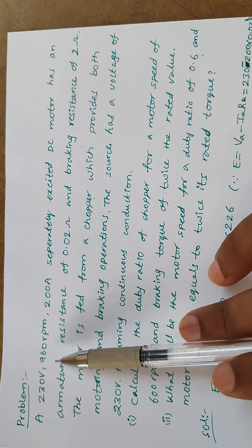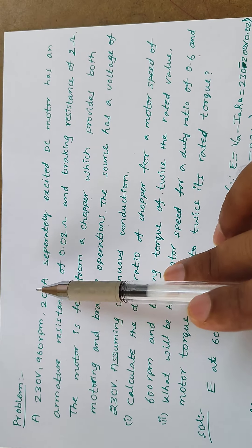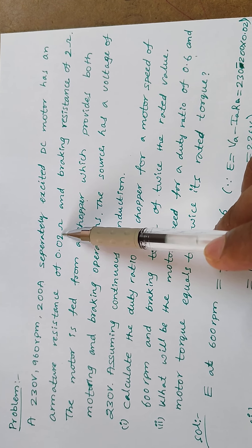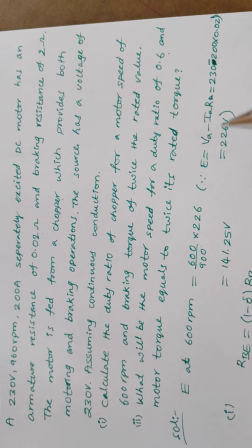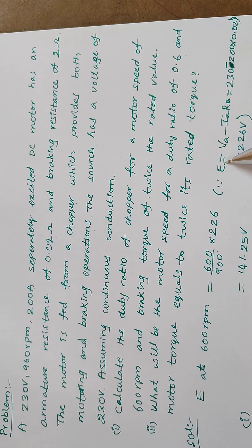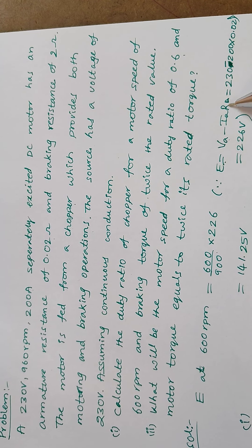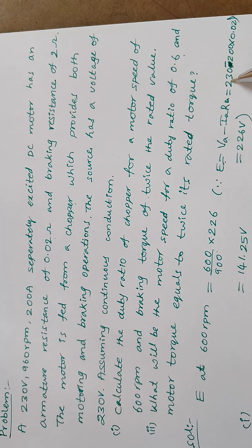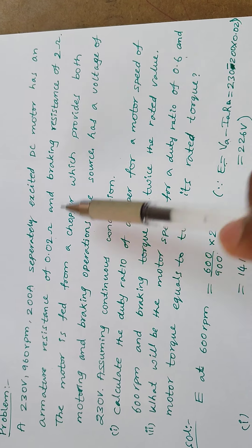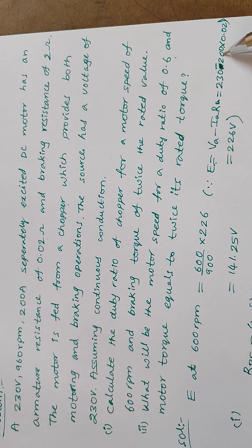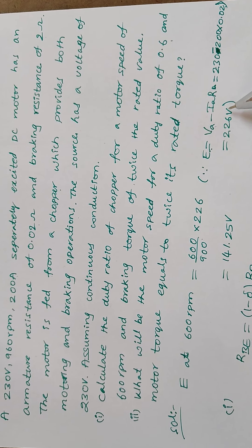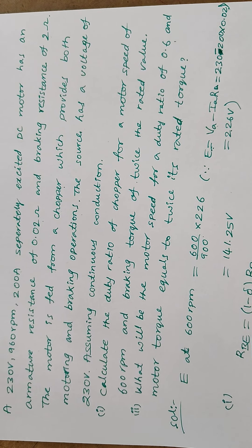From the given data: 230 volts, 200 ampere, armature resistance 0.02 ohms. We'll find out the rated back EMF first. Rated back EMF is Va minus Ia times Ra, that is 230 minus 200 times 0.02, which gives 226 volts as the rated back EMF.